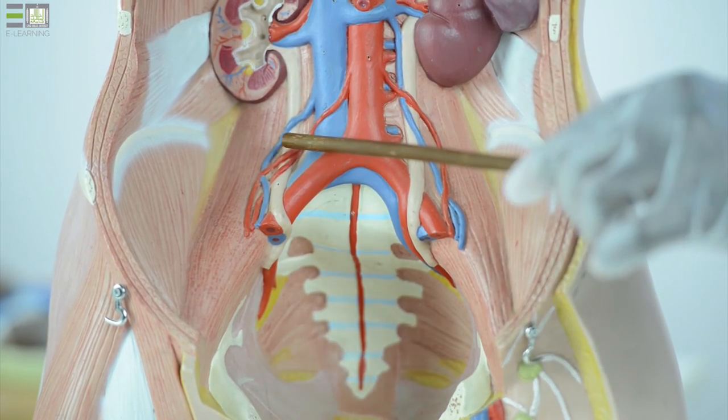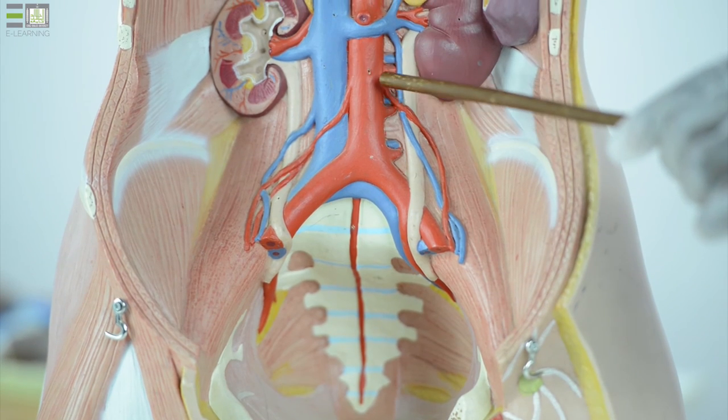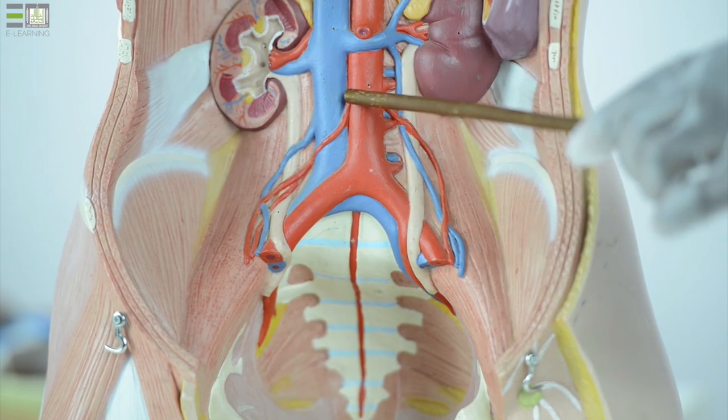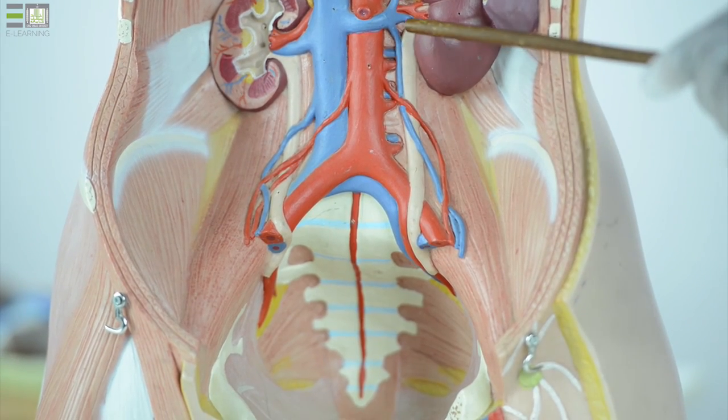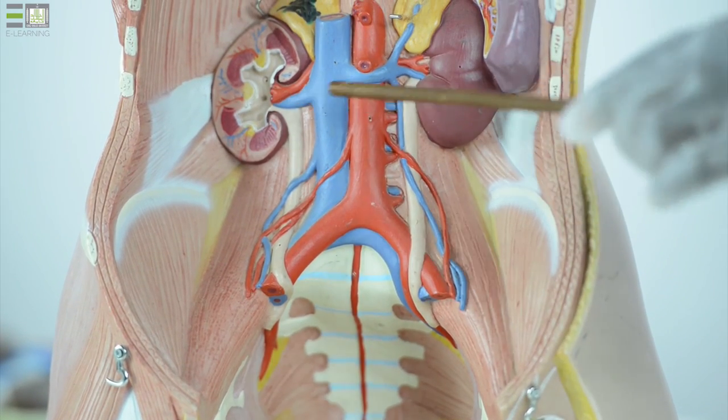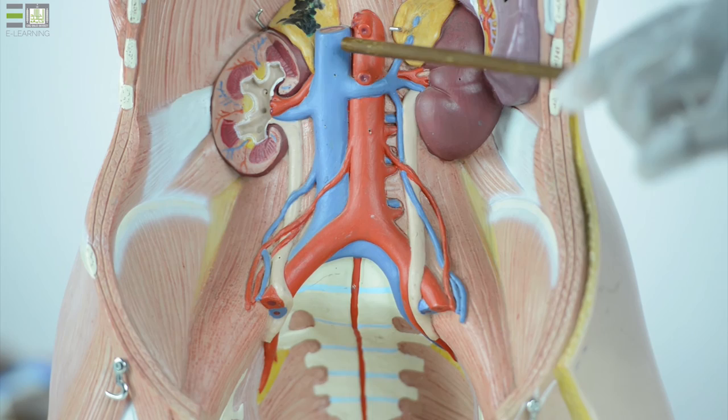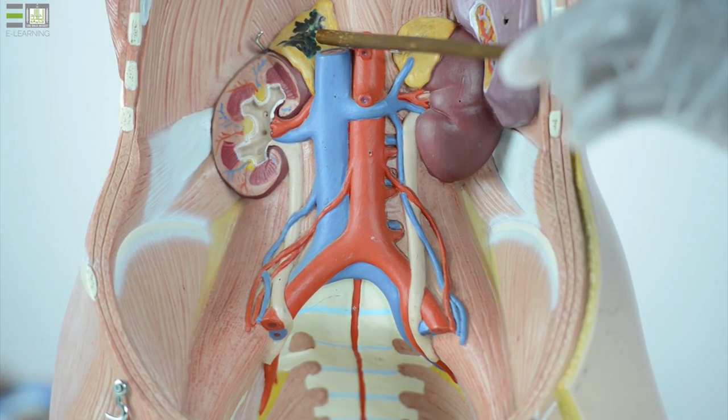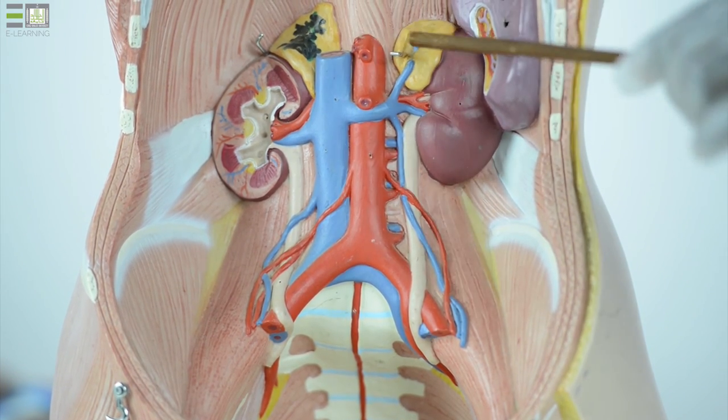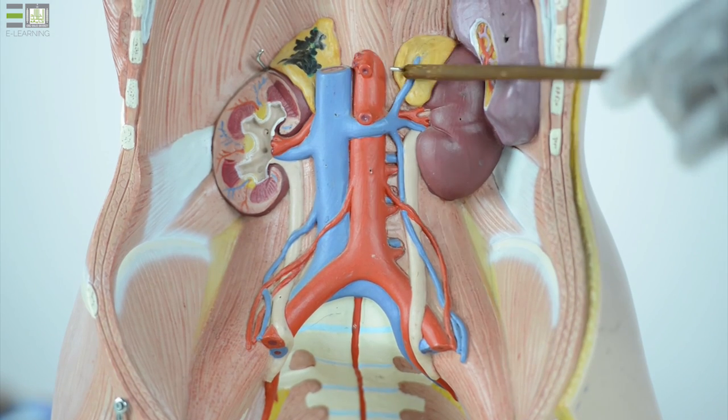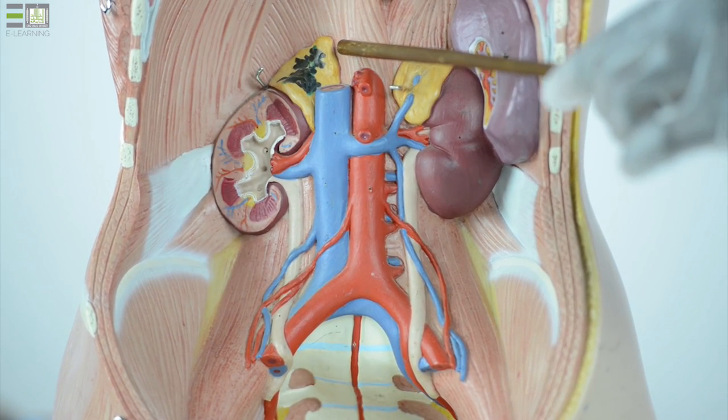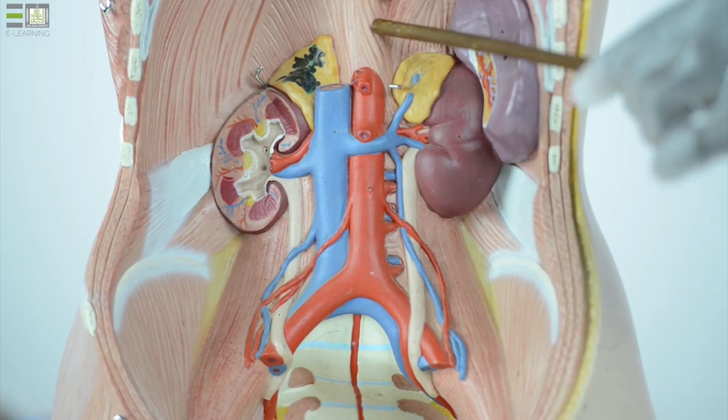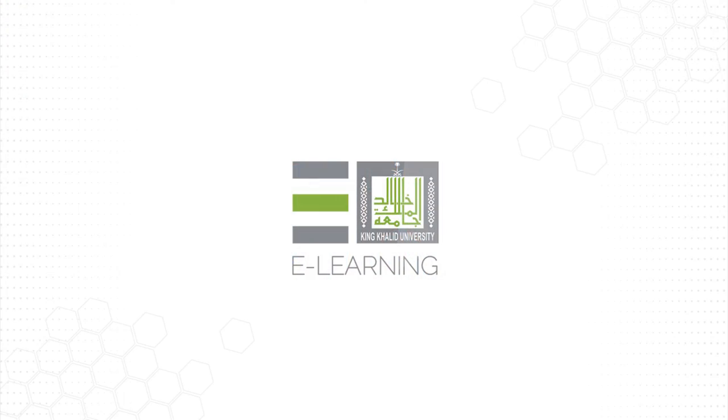Appear also here the paired branches of the aorta: gonadal arteries, the right and the left one, the lumbar arteries, and the renal arteries on both sides of the midline. Also the aorta at this level gives middle suprarenal artery to both suprarenal glands, and here at this level it gives the inferior phrenic arteries to supply the undersurface of the diaphragm.